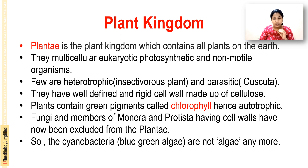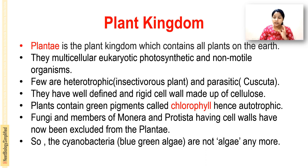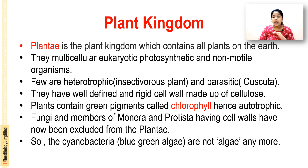So Plantae is the plant kingdom containing all the plants on earth. They are multicellular, eukaryotic, photosynthetic, and non-motile. Heterotrophic exceptions include insectivorous plants like Nepenthes, Sundew, and Venus flytrap, and parasitic forms like Cuscuta. They have a rigid cellulose cell wall and chlorophyll, making them autotrophs. Fungi, Monerans, and Protistans are now excluded, and cyanobacteria are no longer classified as algae.